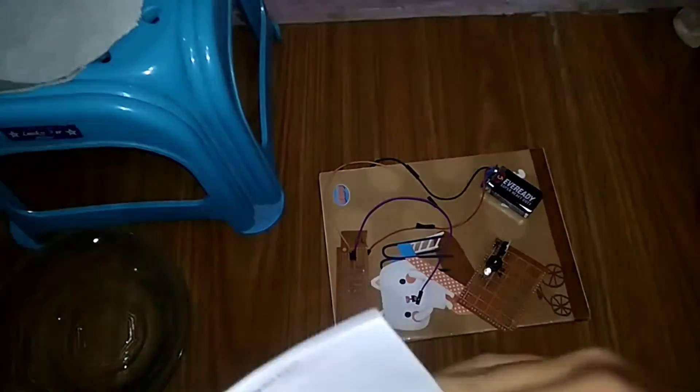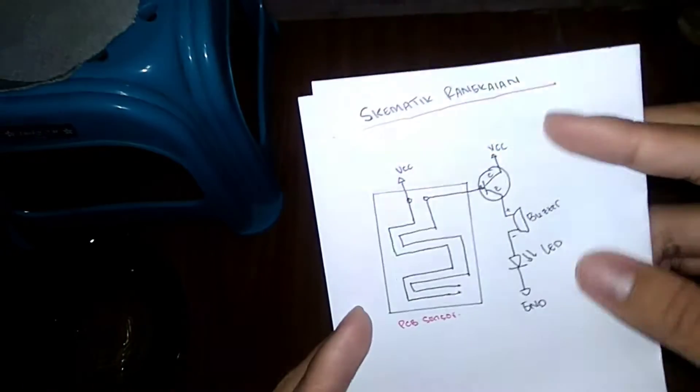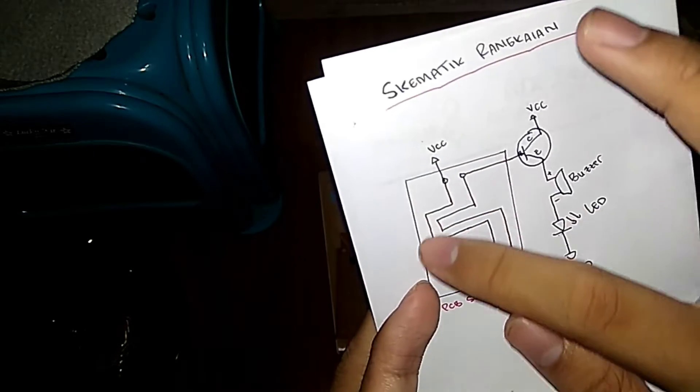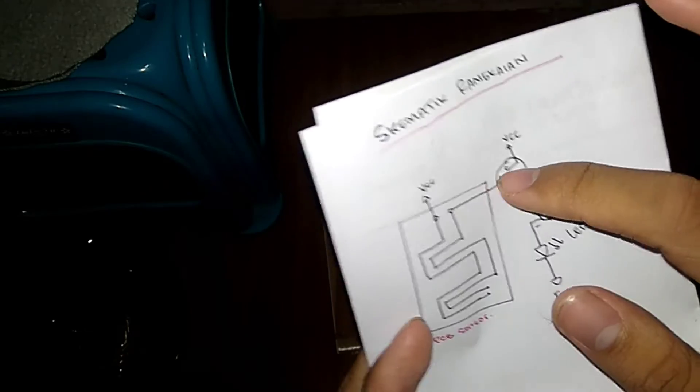Bismillahirrahmanirrahim. Here I will explain a bit about the circuit I have made. Here is the circuit schematic. This is the PCB sensor, this is VCC, the path is like this, and this connects to the basis leg of the transistor.